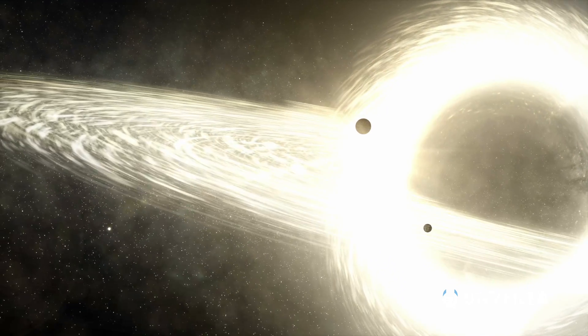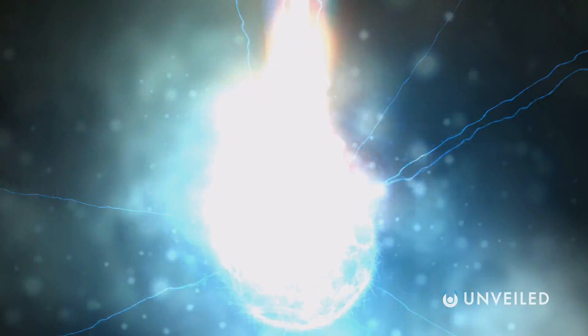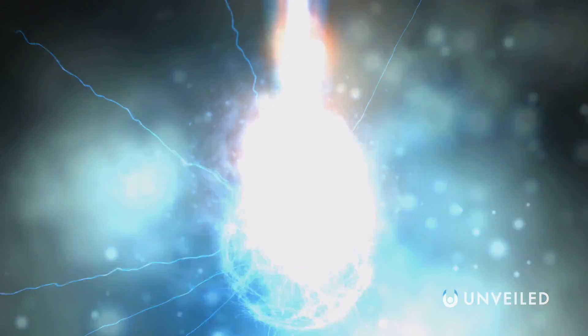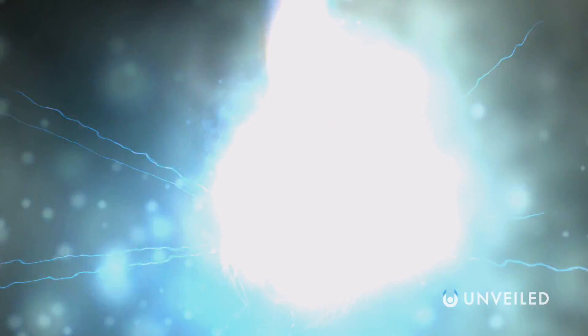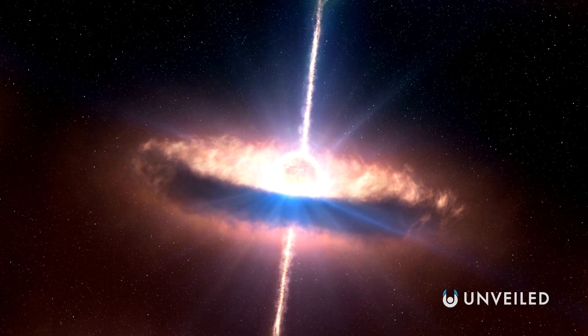A quasar needs a supermassive black hole specifically, though, which is a black hole with a mass often more than a billion times the mass of our sun. And the only places those really occur are at the center of galaxies, which is why quasars only occur at the center of galaxies, too. Not every supermassive black hole turns into a quasar, but when they do it's quite the light show.